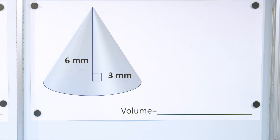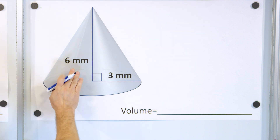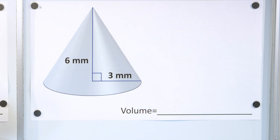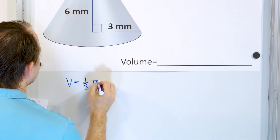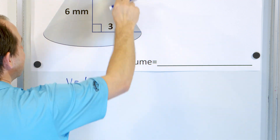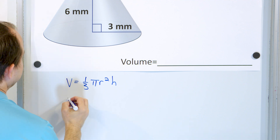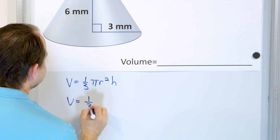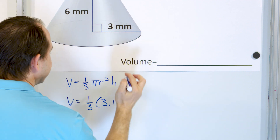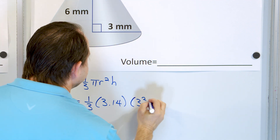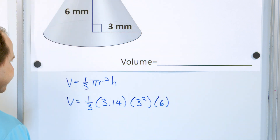Let's take a look at the next problem — we're just getting practice here. The units are in millimeters. The volume of a cone is one-third pi r squared h — surface area at the bottom times the height, cut down to a third. So we have one-third times 3.14 times the radius, which is 3, so 3 squared, and the height is 6, so we have a 6 here.